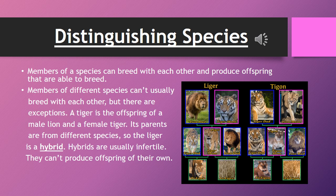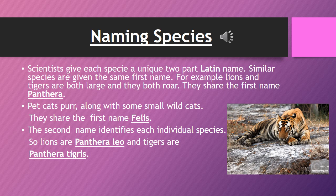Distinguishing species. Animals that can breed can produce offspring with each other. For example, a male lion and female tiger can breed and they produce offspring. Their offspring is called a liger. Its parents are from different species, so the liger is a hybrid. Hybrids are usually infertile — they can't produce offspring of their own.